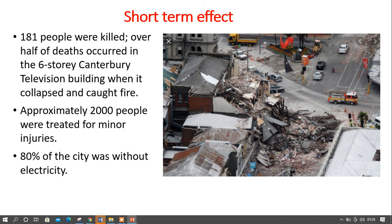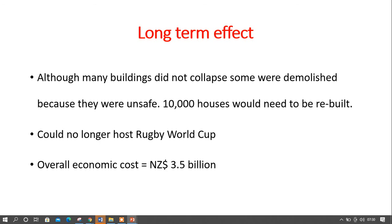The major short-term effects: 181 people were killed in the Christchurch earthquake. Over half of the deaths occurred in the six-storey Canterbury Television building when it collapsed and caught fire — more than 90 people died in that building alone. Approximately 2,000 people were treated for minor injuries, and 80 percent of the city was without electricity, as electrical lines were destroyed by the earthquake.